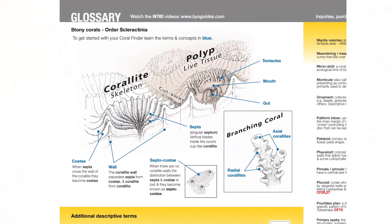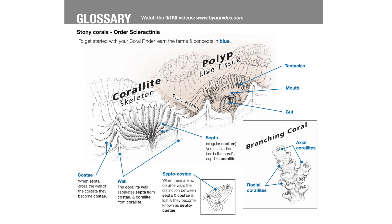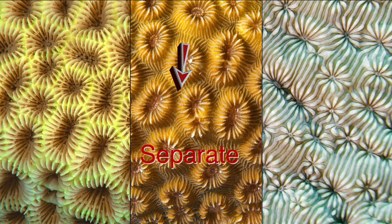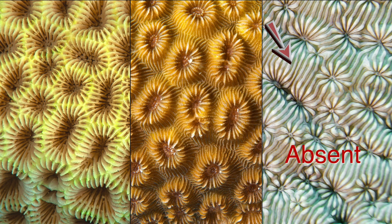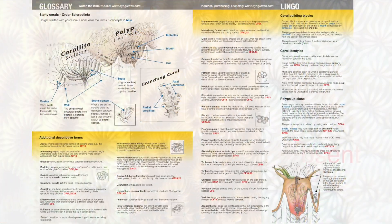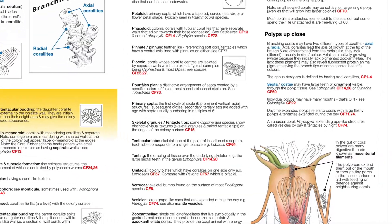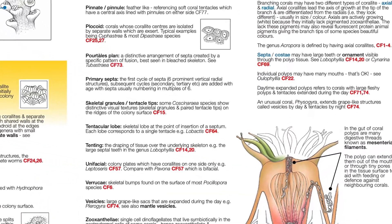To get started, just learn the nine terms in blue in the visual glossary, instead of the hundreds of terms in use by professional taxonomists. You also need to know that the skeletal walls that the polyp built can be shared, separate, or absent.